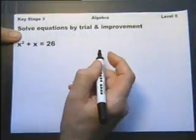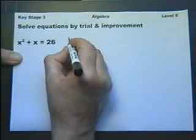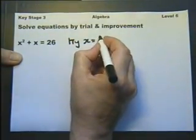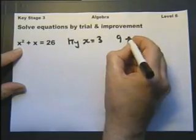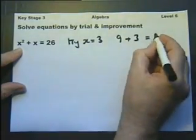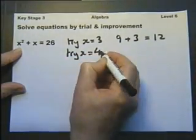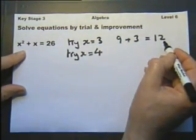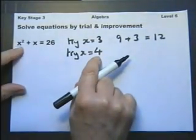Solving equations by trial and improvement. So this is one of the few times that you actually guess in maths. At least you guess to start with. And you say let's try x equals 3. And then we get 3 squared, which will give us 9, plus 3, which will give us 12. Not very good. So then we say try x equals 4. And it's very important you write all this down. You'll get nothing if you don't show your working out for a question like this. So let's try x equals 4.